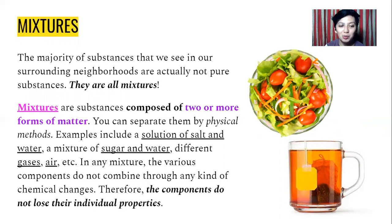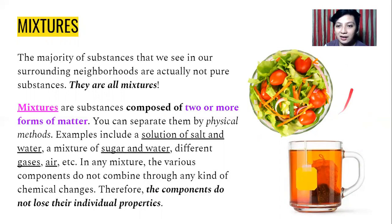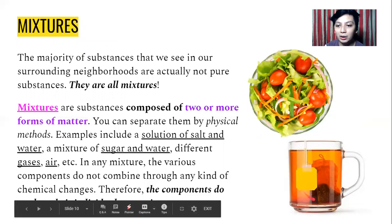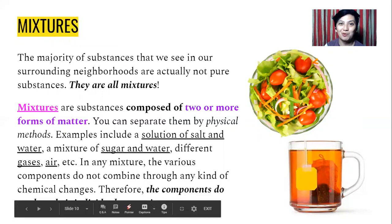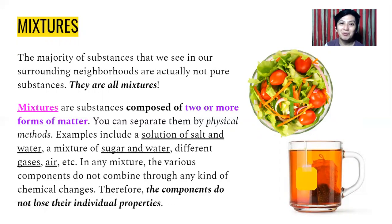Therefore, the components do not lose their individual properties — you are able to see the specific properties of everything in a mixture. For example, in a salad picture you can see the tomato, lettuce, carrots, and onions. And in a teacup, you can see the teabag, the dried tea leaves, and the water. You can identify each characteristic of those substances. That's how we classify a mixture.